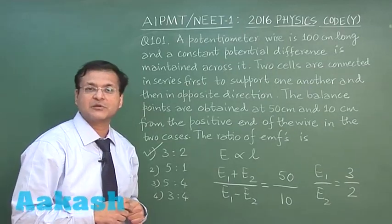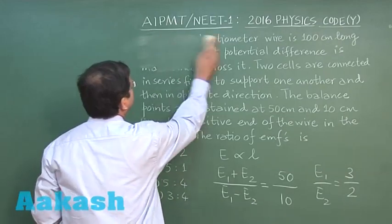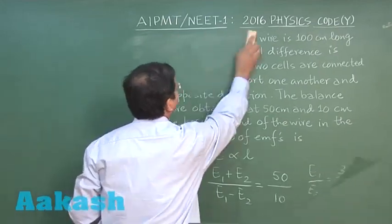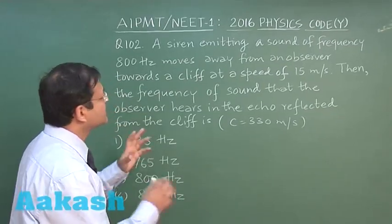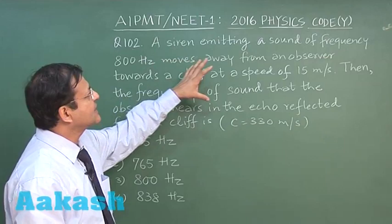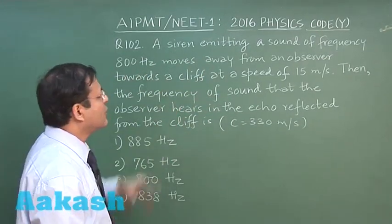Now let us look at next question, that is question 102. Now in this next question, that is question 102, which is based on Doppler's effect, it says that a siren emitting a sound of frequency 800 hertz moves away from an observer.